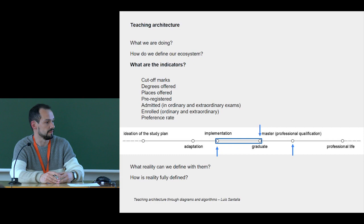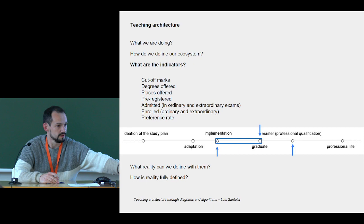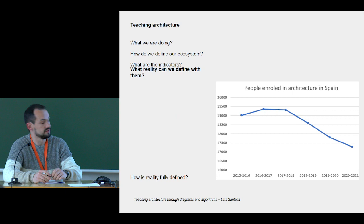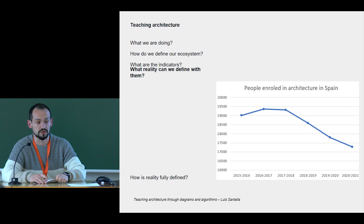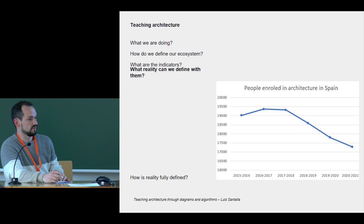So with these indicators, which reality do we have? We can find a chart like this. We don't know if it's good or not. We only know if the number of students are increasing or not. But we don't know how they are really formed, you know.